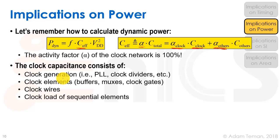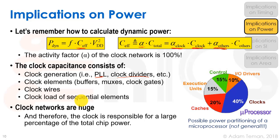The clock capacitance consists of: clock generation (PLL, dividers), clock elements (buffers, muxes, clock gates), the wires with their large RC, and the load of sequential elements — the clock pins on flip-flops. Clock networks are huge, making the clock responsible for a large percentage of total chip power. One example shows 40% of power from clocks, though it can range from about 10% to 80% depending on the system.